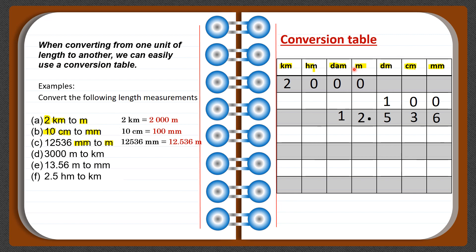When converting from smaller to larger units, we may get decimal points or a reduced number of digits. For the next case, we have 3,000 meters. The last digit, zero, is placed under the meter column, and the other digits fill in according to their positions. Then we locate the asked unit, which is kilometer.